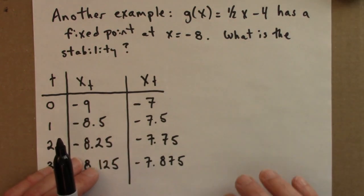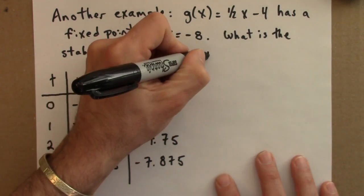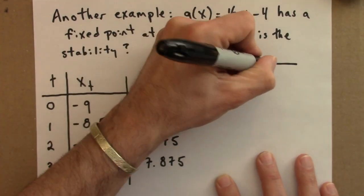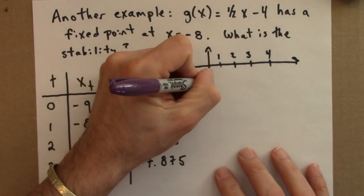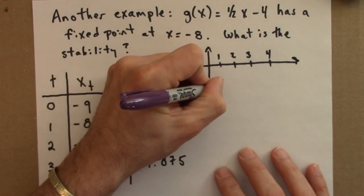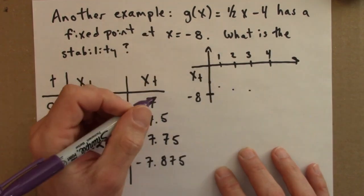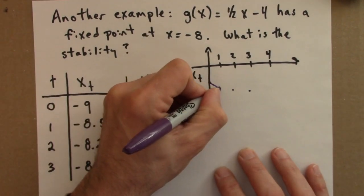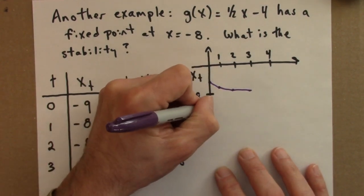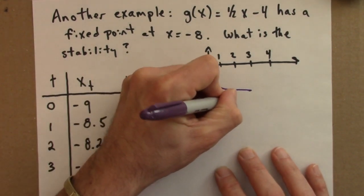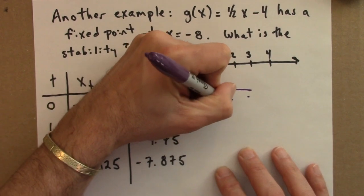I could make a really rough sketch of that on a time series plot. There are my axes. The point minus 7 gets closer to minus 8, and the point minus 9 also gets closer, I should say to minus 8.